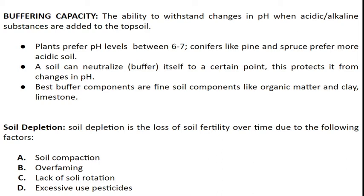The types of substances we can add include dolomite, which is calcium carbonate or what we call limestone, or aluminum sulfate, which can make your soil more acidic. Also, even rainwater that is low in pH can increase the acidity of your soil.